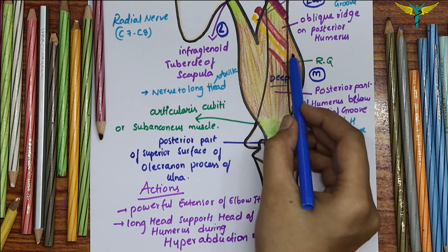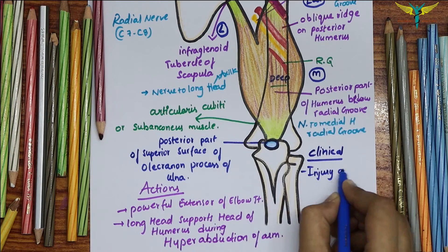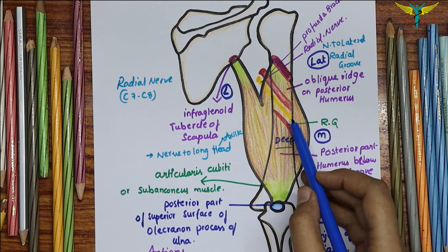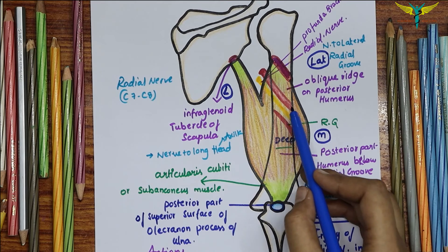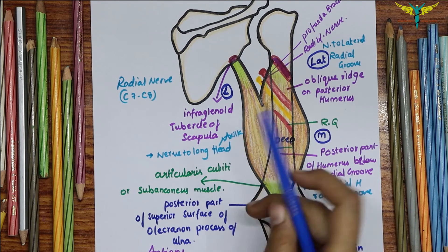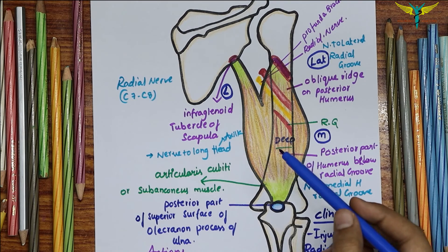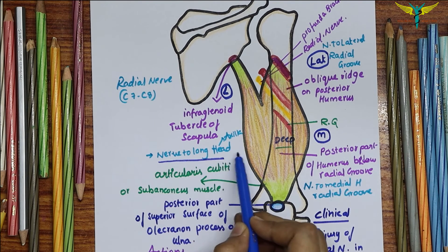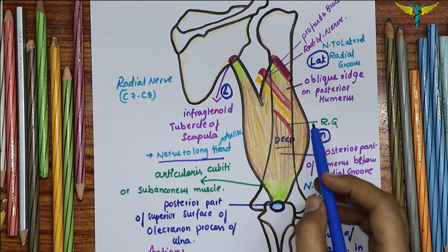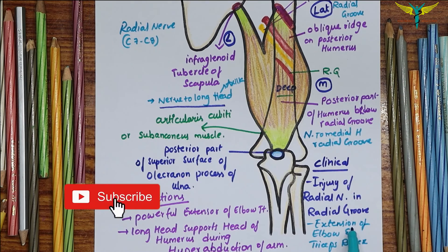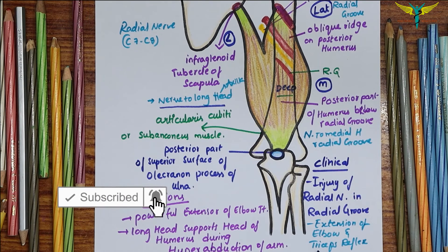The clinical correlation involves injury of the radial nerve in the radial groove. If the radial nerve is damaged in the radial groove, extension of the elbow and the triceps reflex are preserved because the nerve to the long head of the triceps arises from the radial nerve in the axilla, proximal to the injury. However, extension of the elbow and the triceps reflex may be lost depending on the level of injury.